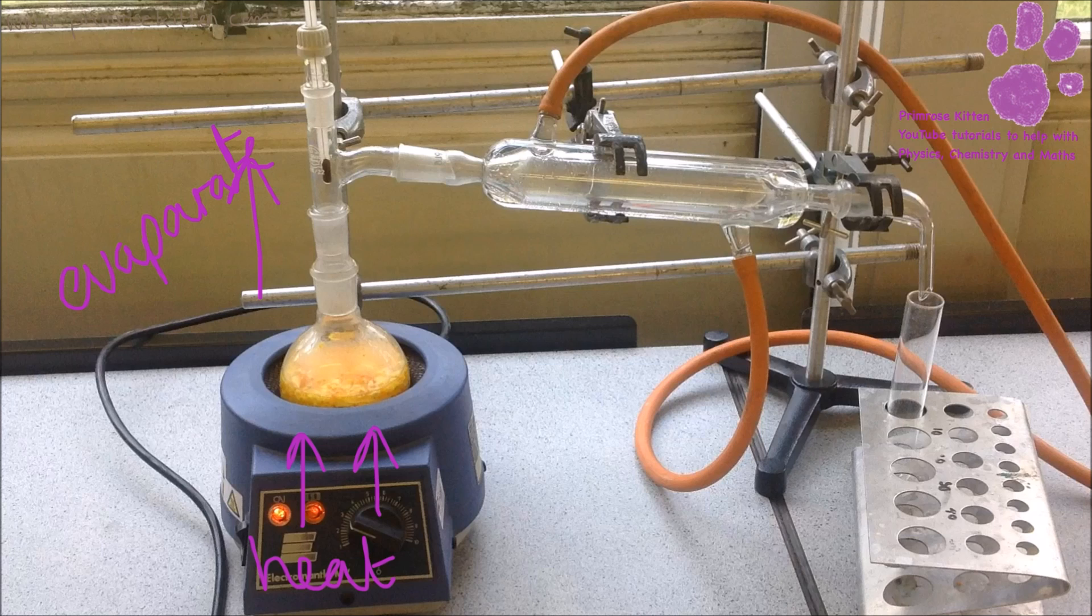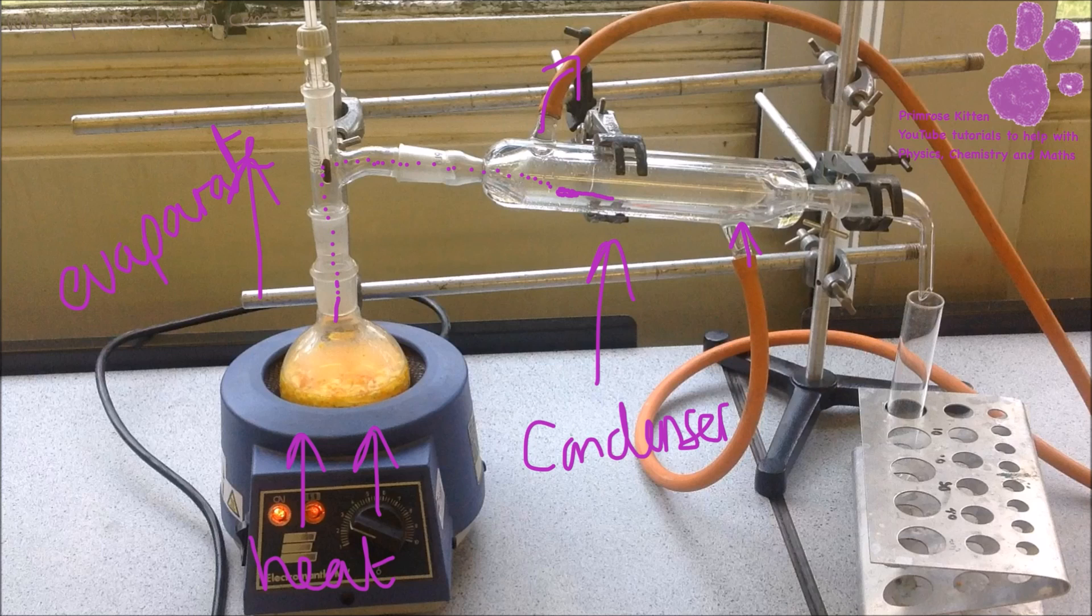The steam will go into the condenser, which has cold water going in here and slightly warm water going out here. As the steam comes up it will go down, and in the condenser it will get cooler and turn into little droplets, turning back into a liquid.